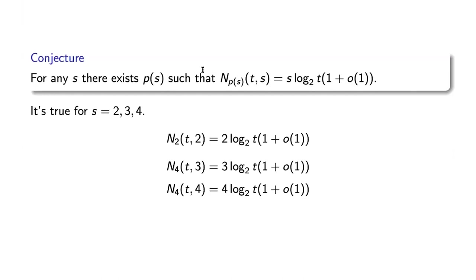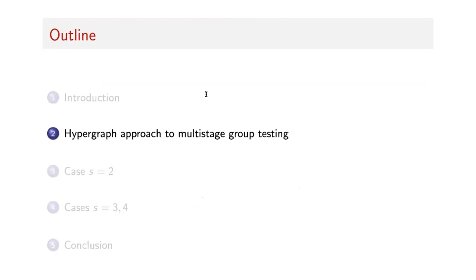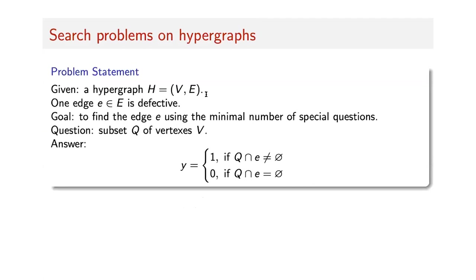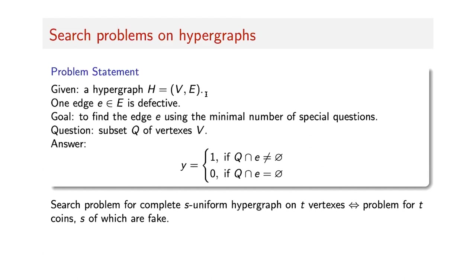Now I will describe a hypergraph approach to this problem. We consider the following problem on a hypergraph: assume we are given some hypergraph, and one edge of this hypergraph is defective. We want to find this edge using the minimum number of questions, where a question is a subset of vertices. The answer is positive if the defective edge has non-zero intersection with this subset. The search problem for a complete S-uniform hypergraph on T vertices is exactly the same as the problem of finding S fake coins among T coins.